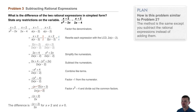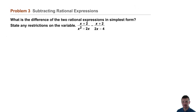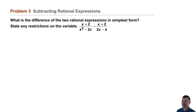Problem three: subtracting rational expressions. What is the difference of the two rational expressions in simplest form? State any restrictions on the variable. The expressions are x plus 2 over x squared minus 2x, minus x plus 2 over 2x minus 4.